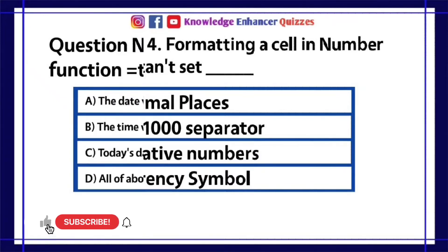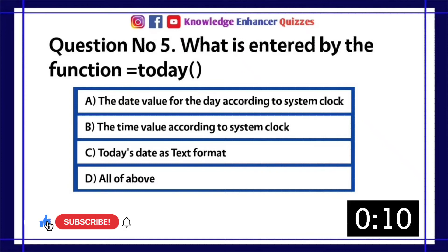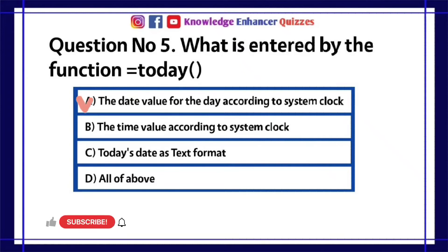Question number 5. What is entered by the function =today()? A. The date value for the day according to system clock. B. The time value according to system clock. C. Today's date as text format. D. All of above. Option A is the right answer.